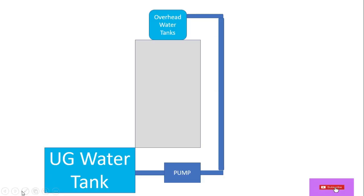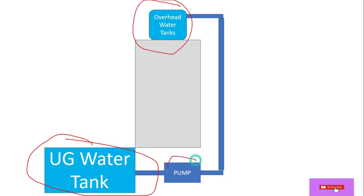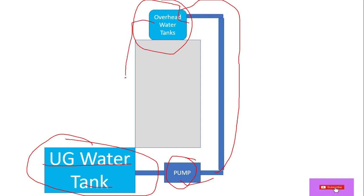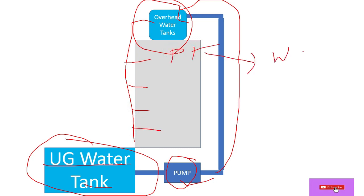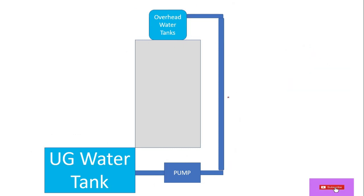Here we have a system: this is the underground water tank and this is the overhead tank. Here we have a pump, and with the help of this pump, water is transferred from the underground tank to the overhead tank. From there it distributes water towards the plumbing fixtures — wash basin, shower, bathtub, etc.